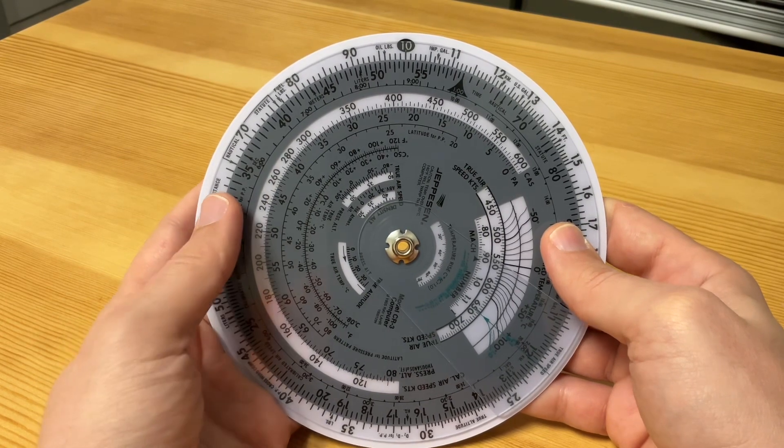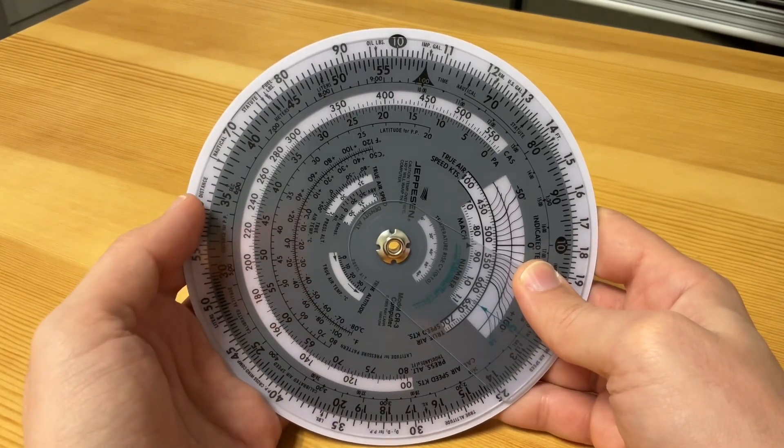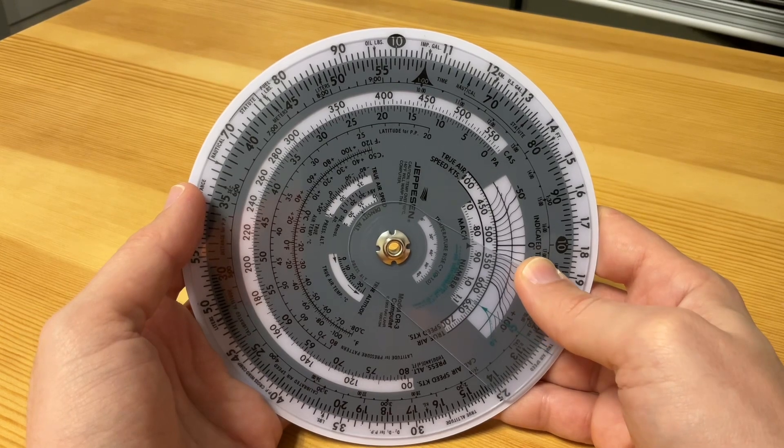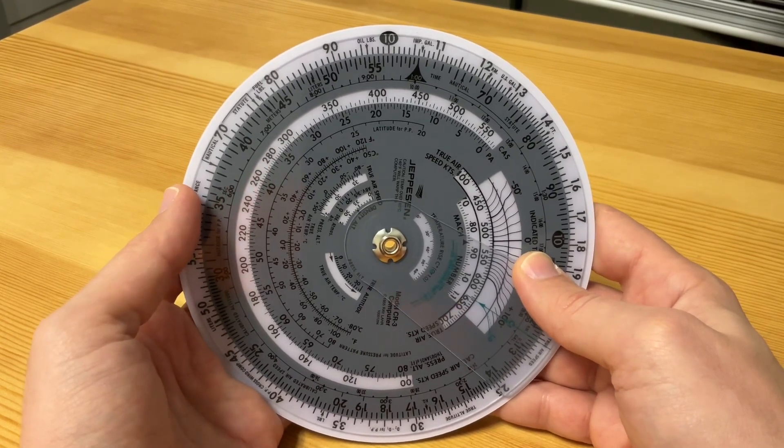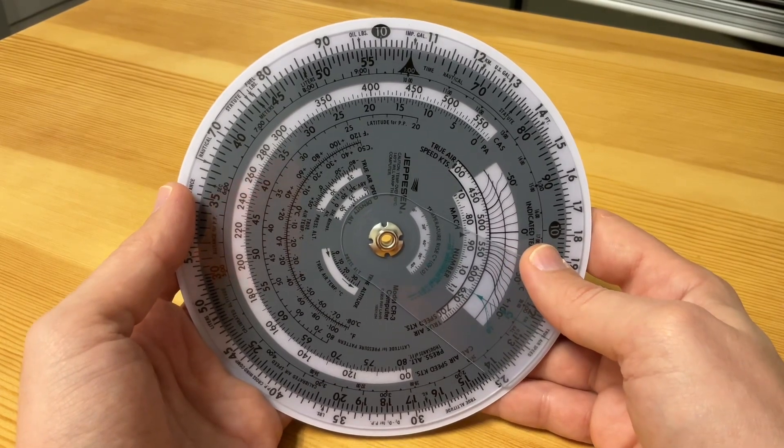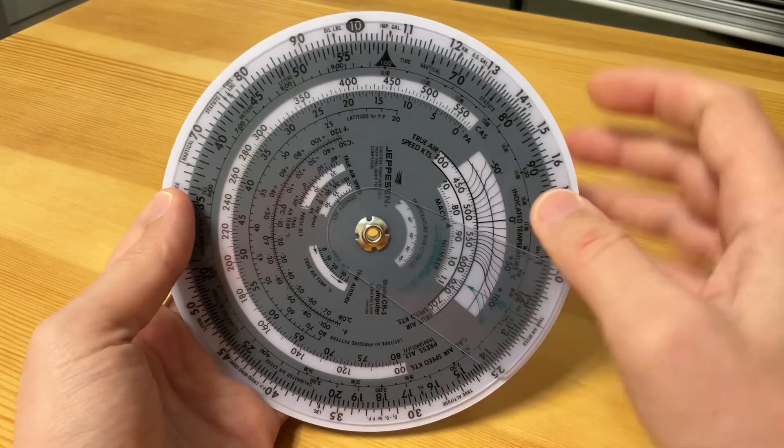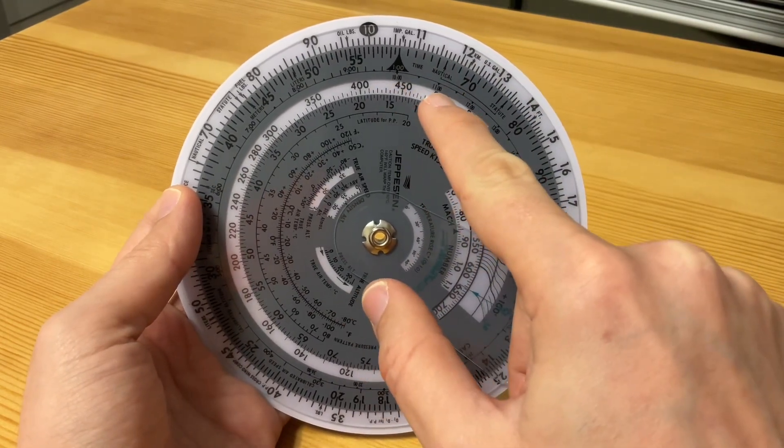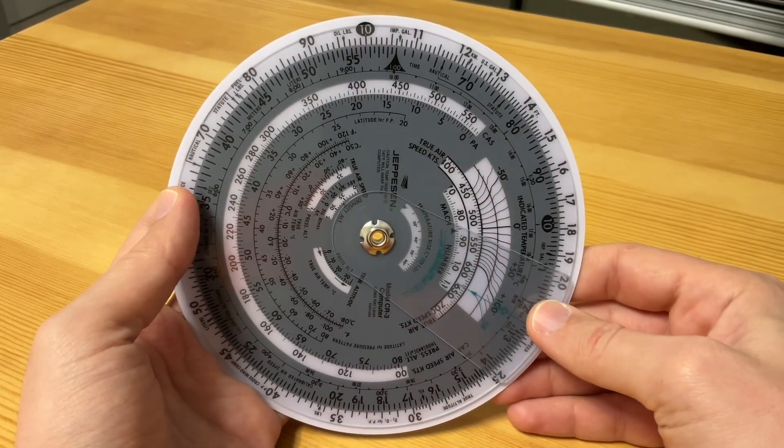When we set this against the numbers on the fixed portion, it allows us to solve problems like time, speed, distance, fuel consumption, and make conversions between measurements such as statute and nautical miles. The inner scale on the rotating disk is graduated in hours: 10, 11, 12, 13.